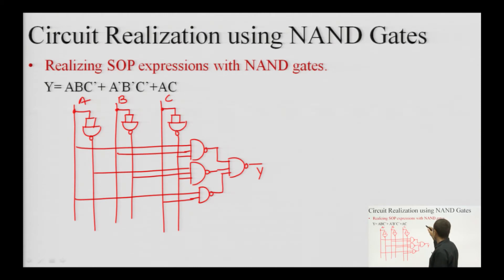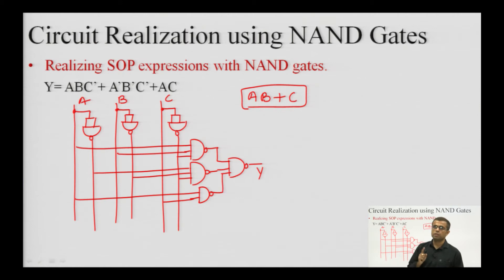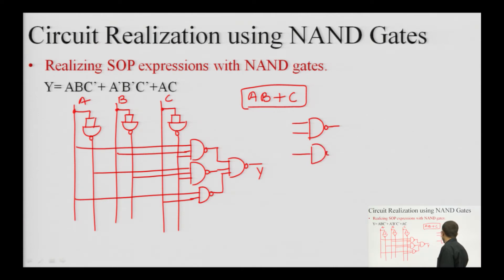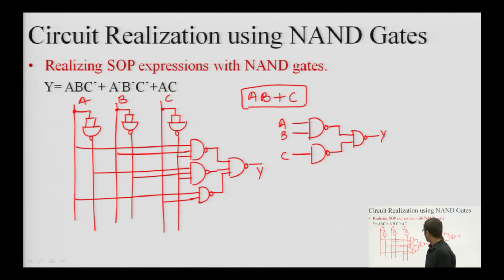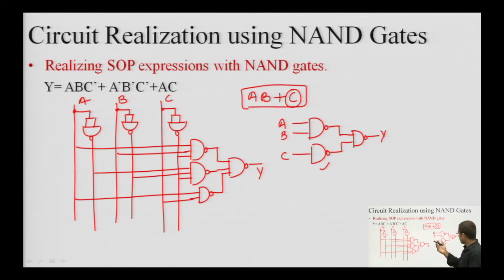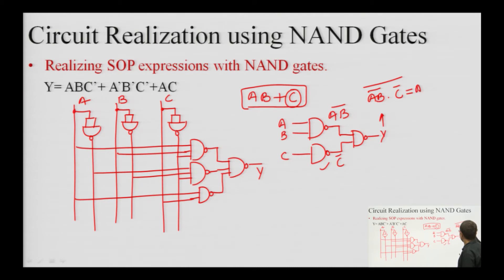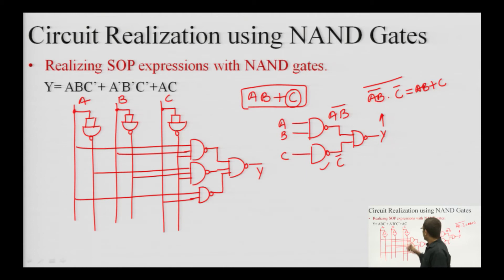It is very clear that SOP expressions can be easily realized using NAND structures. However, one thing to keep in mind: if I realize AB + C using NAND gates, this C which appears as a plain variable must also pass through a NAND gate — there cannot be a direct connection. Only then is it equivalent to the AND-OR structure. We can verify: AB complement from one NAND, C complement from another, and combining them gives AB double complement plus C, which equals AB + C.